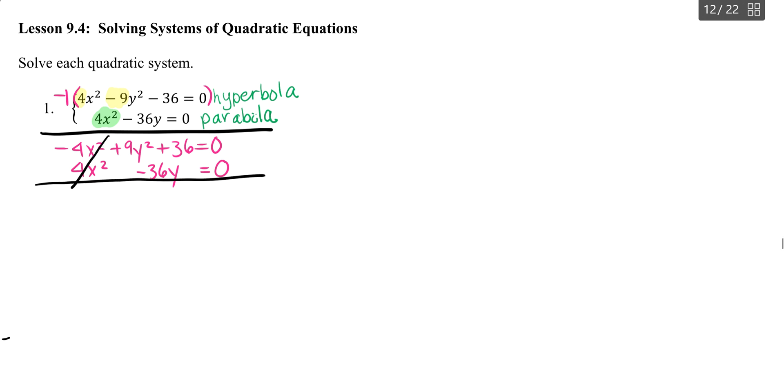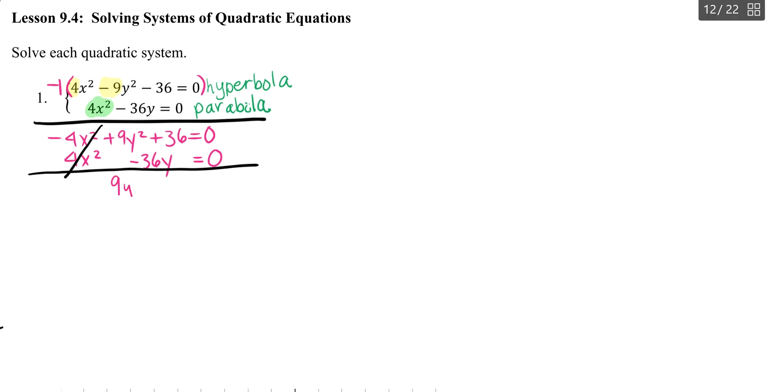Once those cancel, then what I'm left with is 9y squared minus 36y plus 36 equals 0.